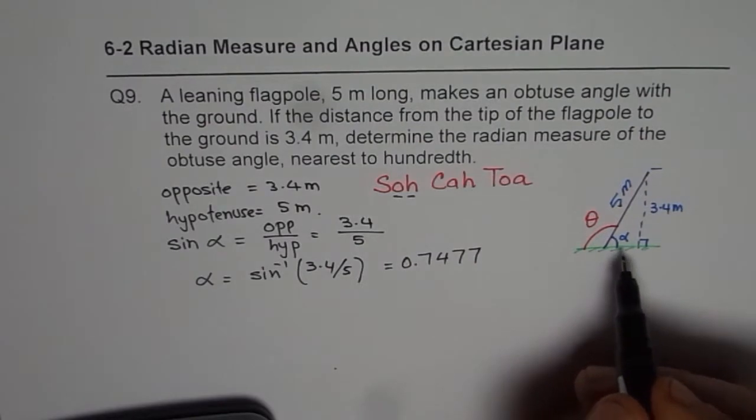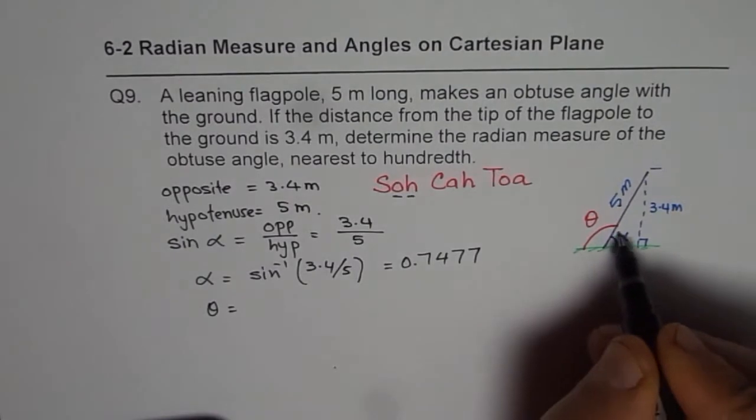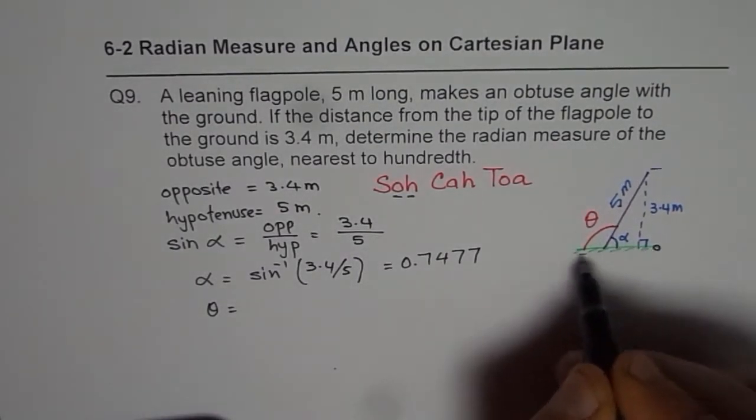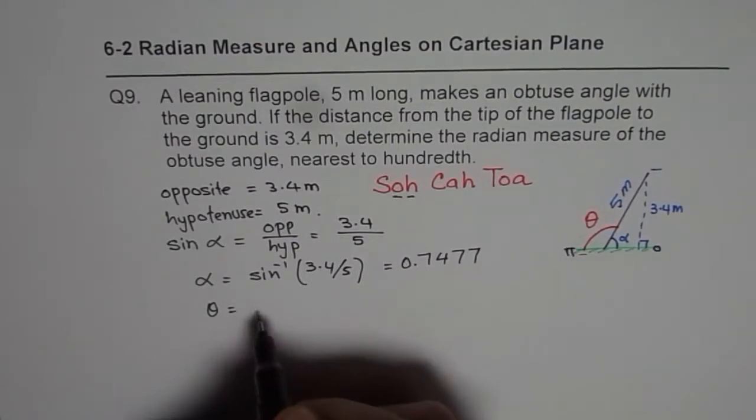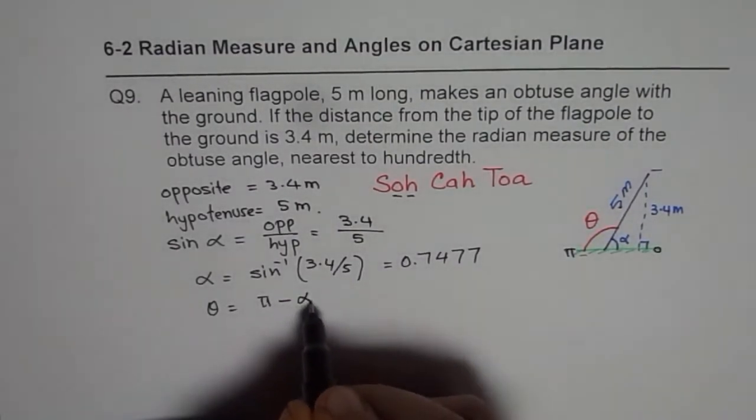But what we really need is the obtuse angle theta. So theta should be, since this total is a linear angle the line makes pi, this angle is 0 to pi, so theta should be pi minus alpha.